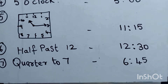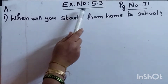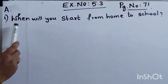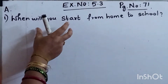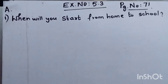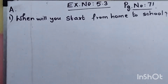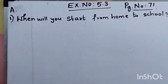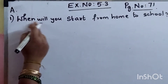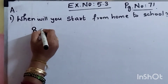Now take your textbook, Exercise 5.3, page number 71. The first question: when will you start from home to school? This differs from person to person — it depends on the individual and how far they live. If my school starts at 9 o'clock, I will start from home at 8:30 a.m.